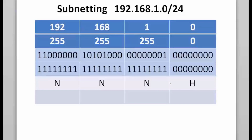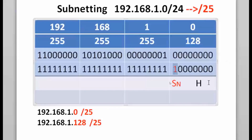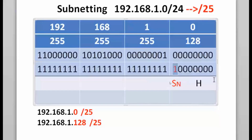To subnet this network, I can borrow one bit from the host portion of the subnet mask, giving me one subnet bit. This changes the subnet mask from slash 24 to slash 25. Borrowing one bit creates two to the first power, making two possible subnetworks: 192.168.1.0 and 192.168.1.128, both slash 25, with 126 usable hosts each.